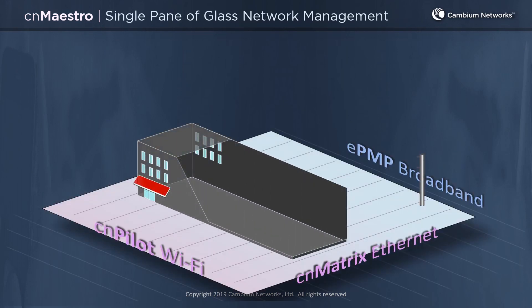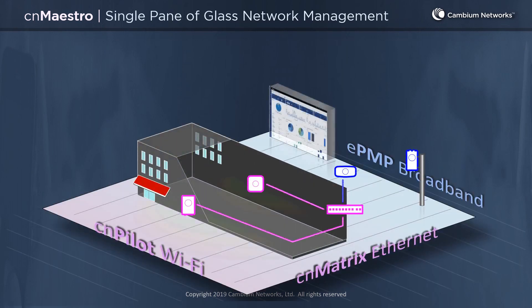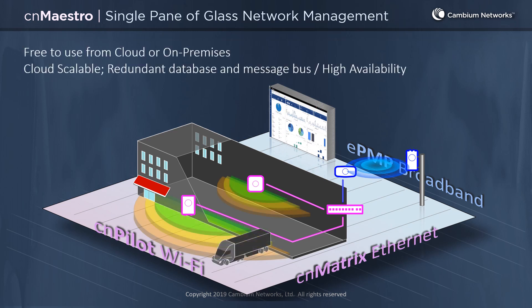CNMaestro is developed by Cambium Networks as a single pane of glass network management tool. It's designed to bring together the diverse components of the Cambium Networks wireless fabric. CNMaestro is free to use from the cloud, on-premises, or in your own private data center. It is built on cloud-scalable technologies with a redundant database and redundant message bus, featuring high availability for 7x24 network management and network access.